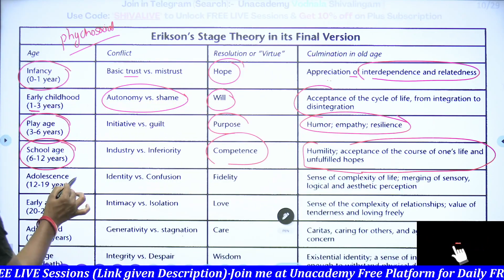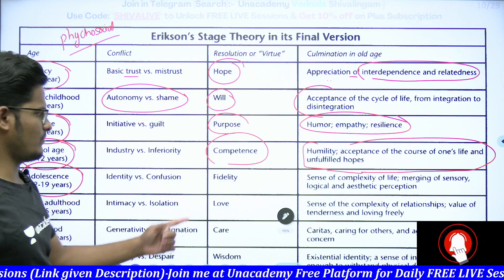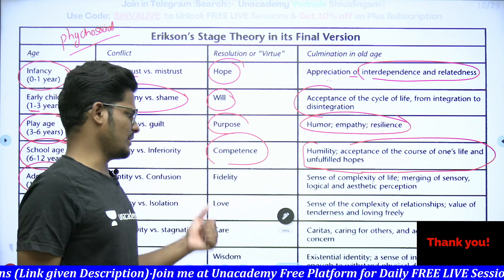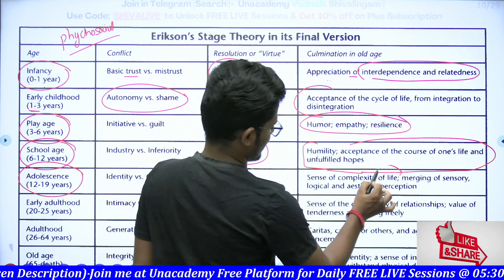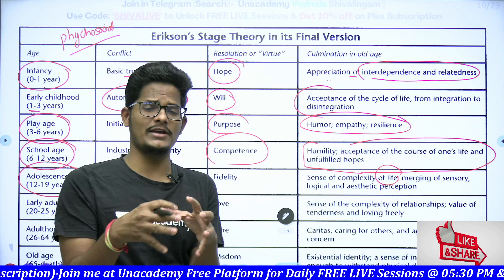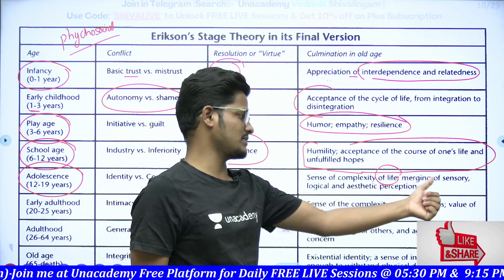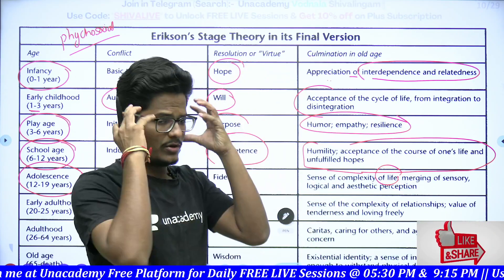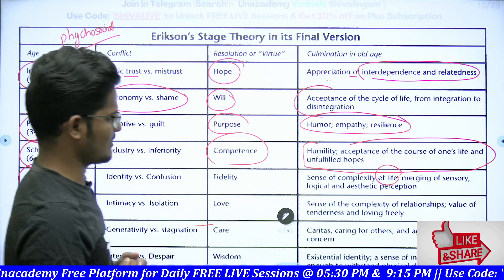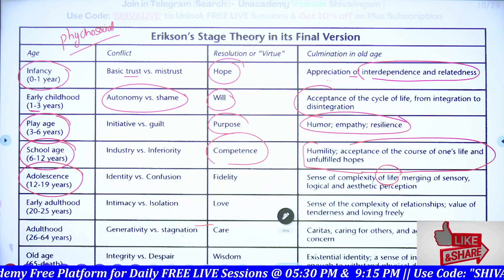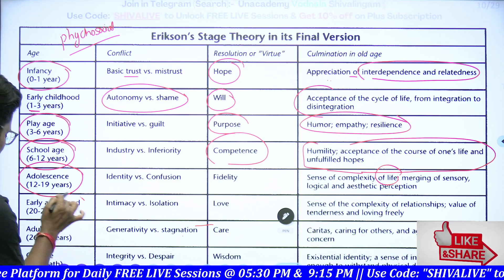Adolescence, twelve to nineteen years, involves identity versus confusion as the conflict. The virtue is fidelity — concentration should be more emphasized here. There is a sense of complexity of life; this is the stage where one encounters the highest difficulties, with logical and aesthetic perception developing. It is not about any philosophy, but an aesthetic type of perception created in our mind.